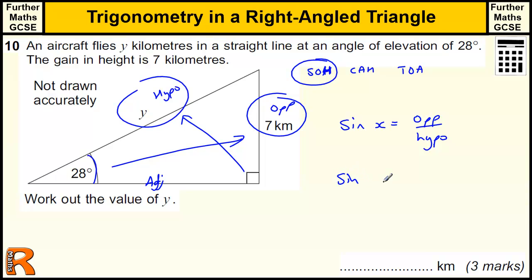Let's put the numbers we've got. So we've got sine of 28 degrees equals the opposite, which is 7, divided by the hypotenuse, which is y.